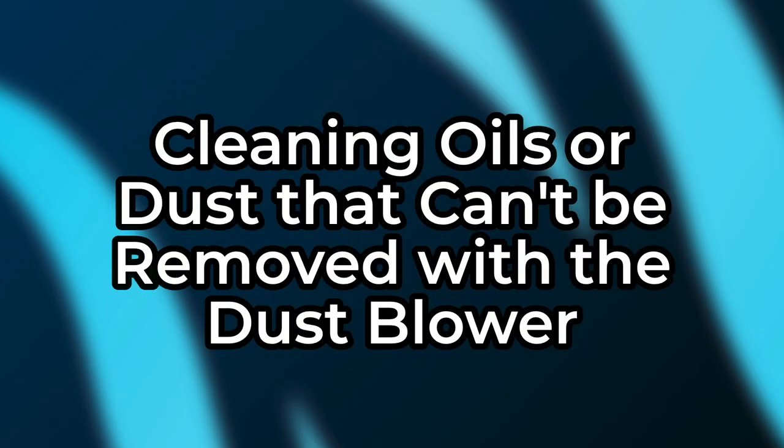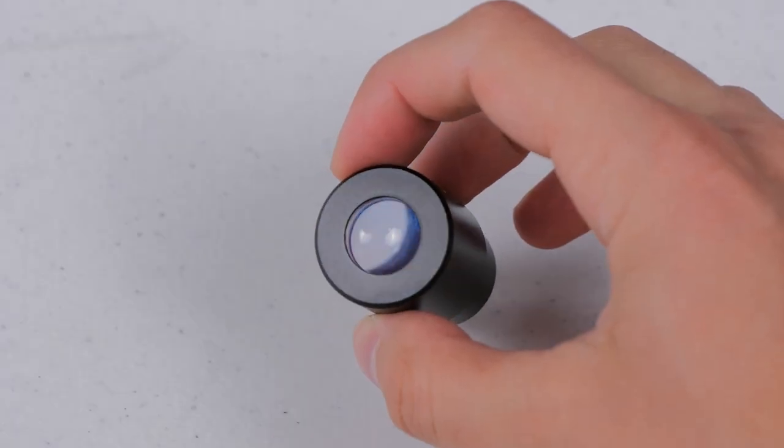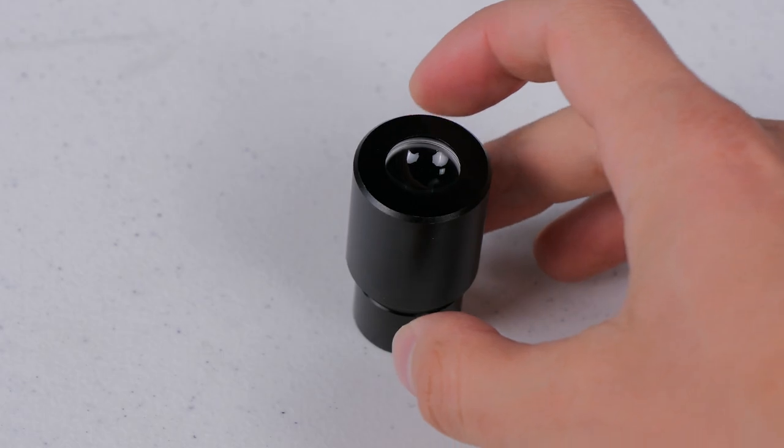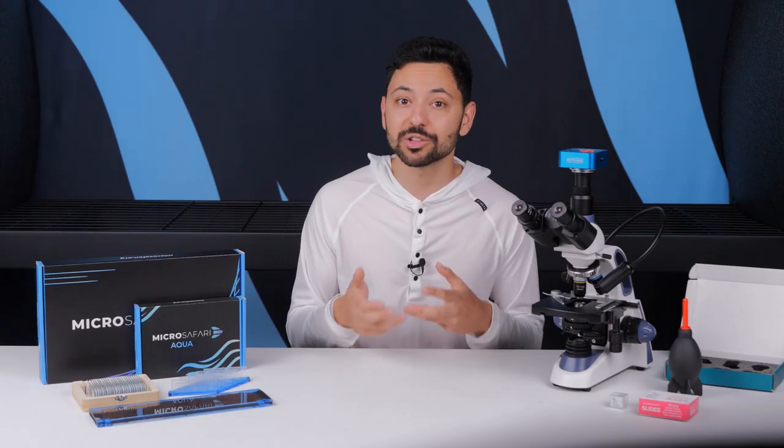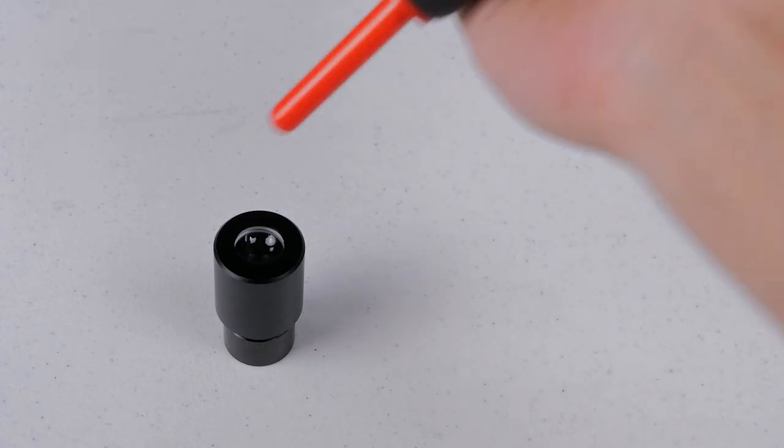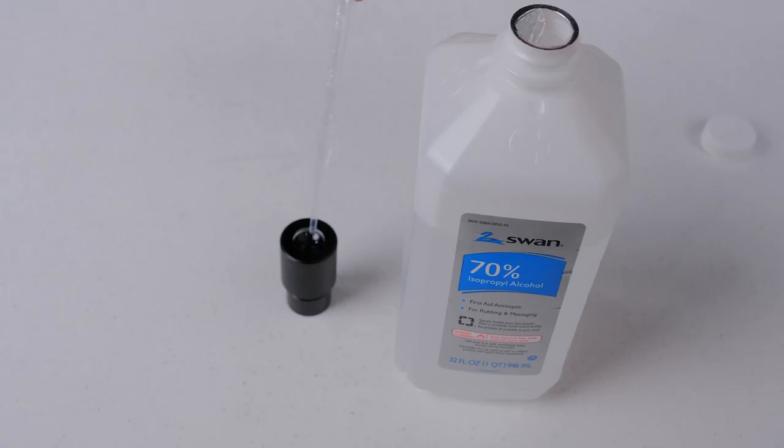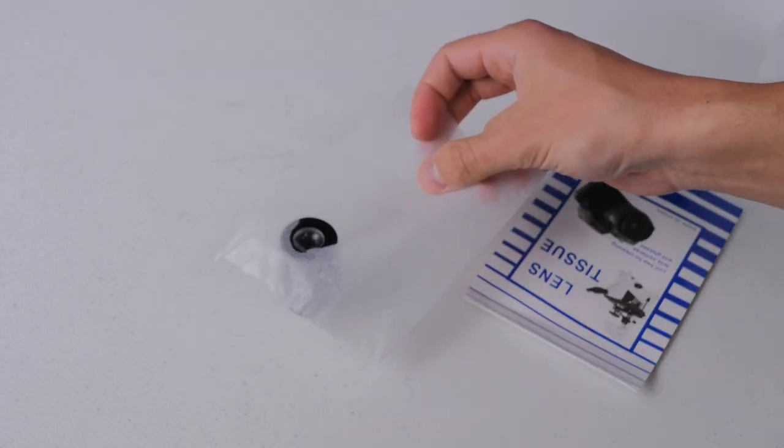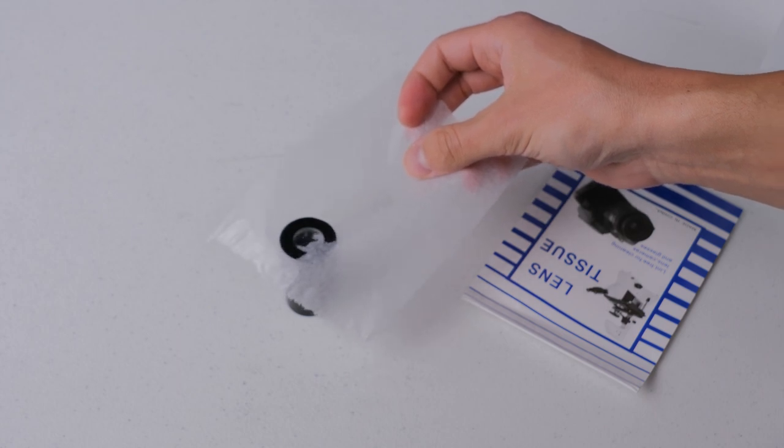Cleaning oils or dust that can't be removed with the dust blower. It's inevitable that if you use the eyepieces enough your eyelashes will touch the lenses and contaminate them with oils that will cause dust particles to stick to the glass stronger than what you can blow off with the hand dust blower. Start by blowing off any loose dust and then drop some regular ol' isopropyl alcohol, aka rubbing alcohol, onto the eyepiece. Using either the included lens paper or just a clean microfiber cloth wick away the majority of the isopropyl alcohol.